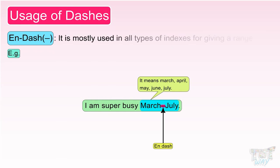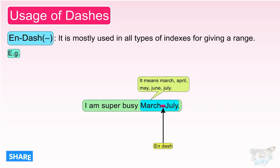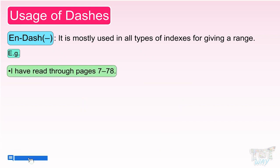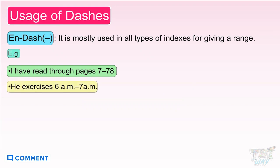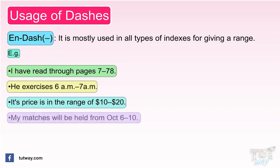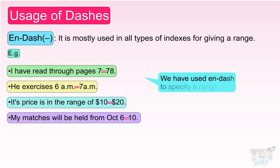N dash is mostly used in all types of indexes for giving a range. Let's see more examples: 'I have read through pages 7 to 78.' 'He exercises 6 a.m. to 7 a.m.' 'Its price is in the range of $10 to $20.' 'My matches will be held from October 6 to 10.' So you can see we have used N dash to specify a range.